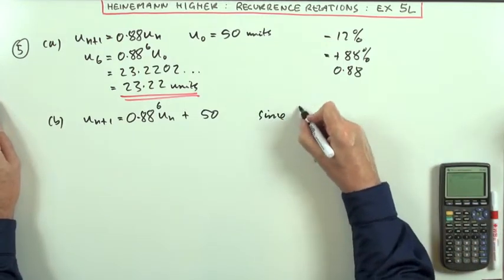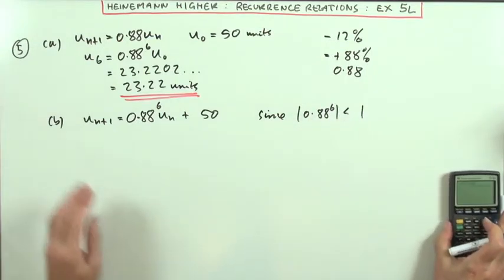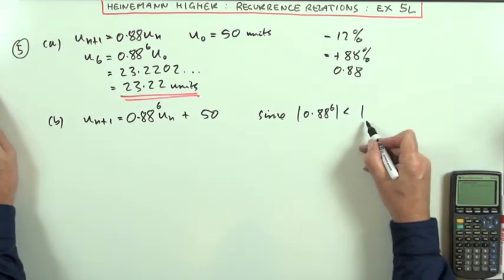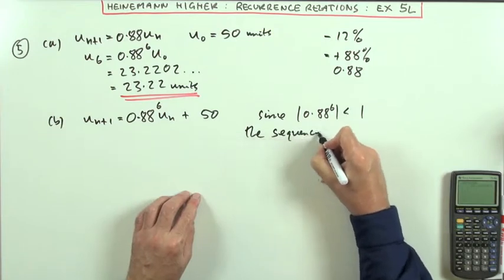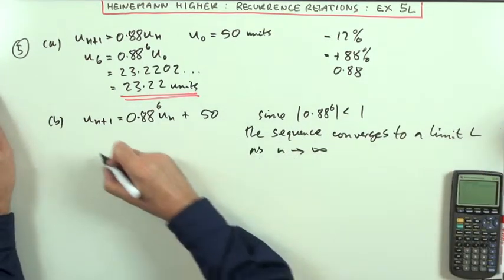So since that coefficient 0.88 to the power 6, and 0.88 is certainly less than 1, so power 6 will make it even smaller still. Since that's a proper fraction, then you can see definitely that the sequence converges to a limit, call it L, as n times infinity.